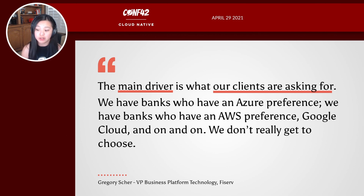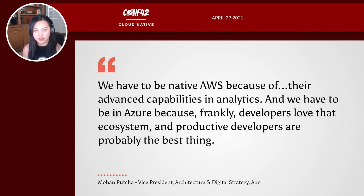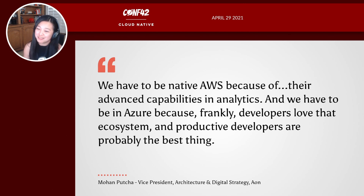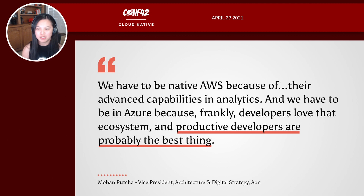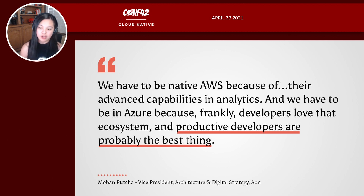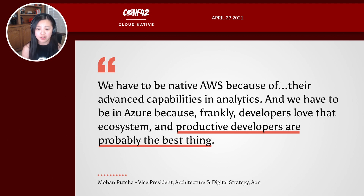Next is Mohan Puca, VP of Architecture and Digital Strategy at Aeon, a multinational company offering financial risk mitigation products. He says: 'We have to be native AWS because of their advanced analytics capabilities, and we have to be in Azure because frankly, developers love that ecosystem, and productive developers are probably the best thing.' Multi-cloud decisions are coming both top-down and bottom-up from developers who want the best tools for the job.